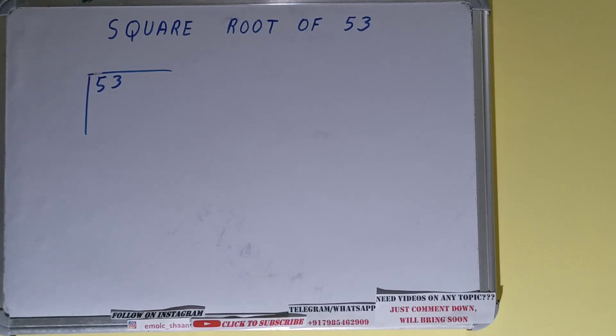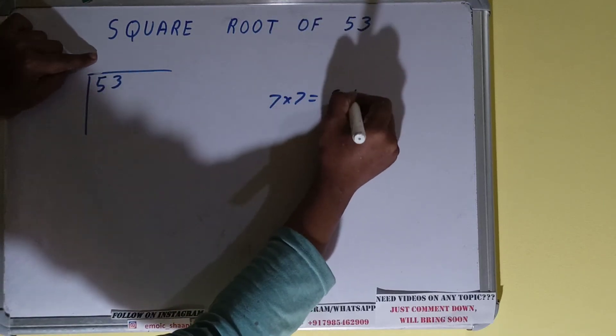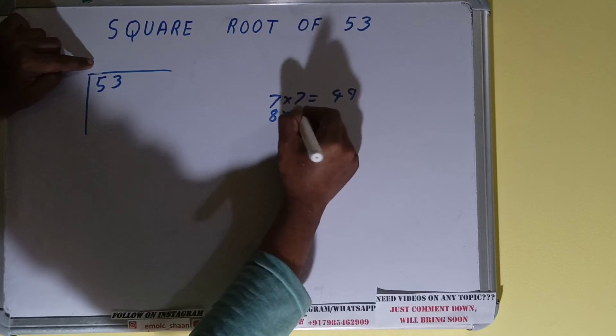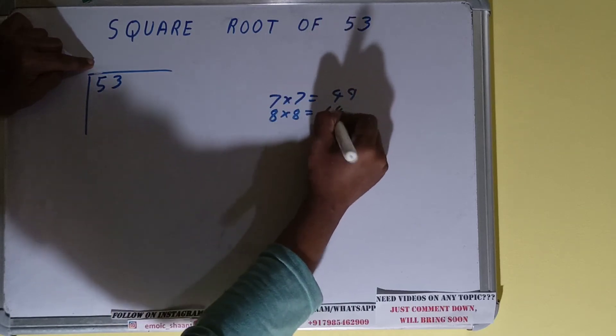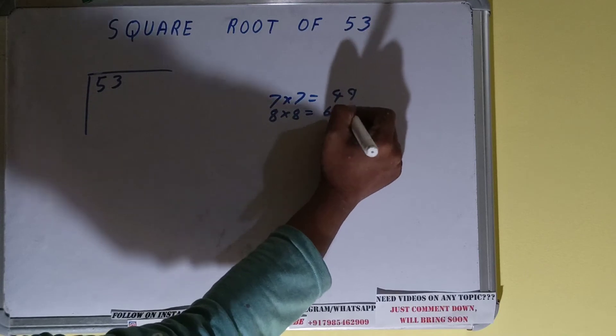So let's say if we take a 7 here, we have to take 7 here as well, which will give 49. If we take 8 here, we have to take 8 here as well, which will give 64. So we cannot take 8 because 64 is greater than 53. We have to take this one.